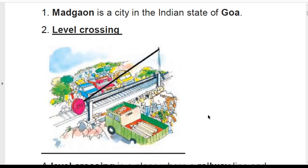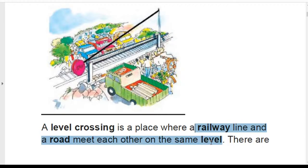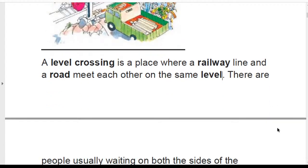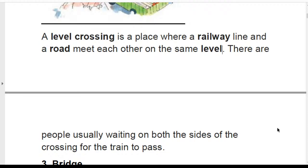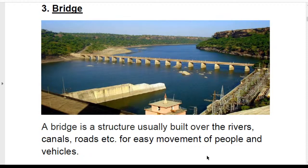There is a level crossing mentioned in this chapter. A level crossing is a place where a railway line and a road meet each other on the same level. Please underline 'railway line' and 'a road meet each other on the same level.' There are usually people waiting on both sides of the crossing for the train to pass.